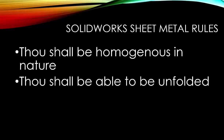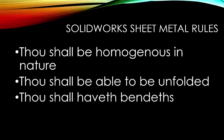The second rule is that it has to be able to be unfolded. I point this out because sometimes people get a stamping, and a stamping is not folded into the condition it's at - it's actually formed into that shape. So while it may be a sheet metal part made out of sheet metal, it's not a SolidWorks sheet metal part because it doesn't follow this rule. The last rule is that you have to have bends in it. Bends allow you to unfold the part and get the bend allowances or k-factor calculated. So: even thickness, must be unfoldable, and must have bends.